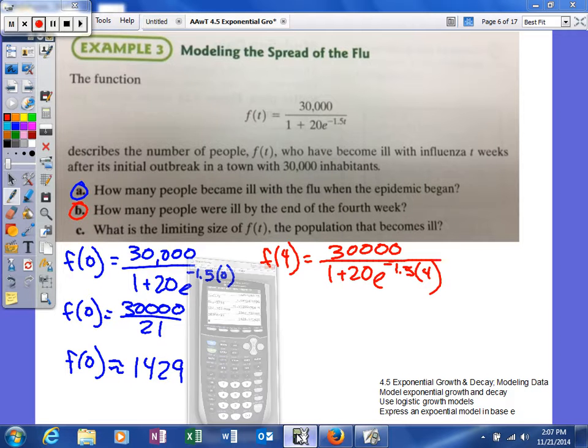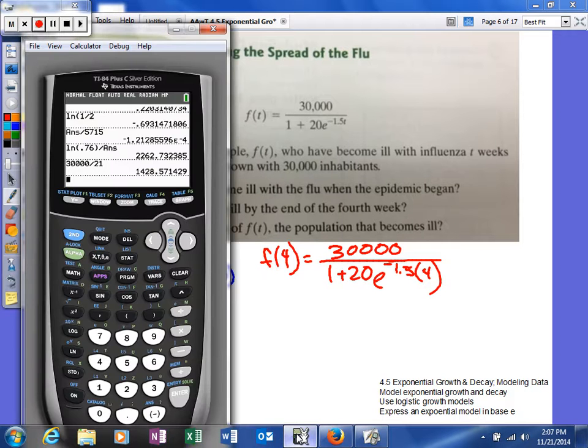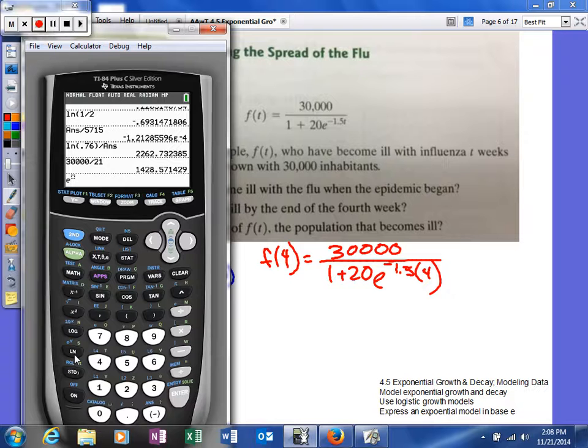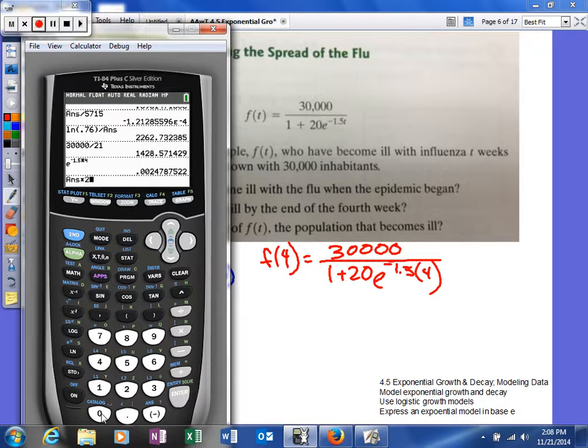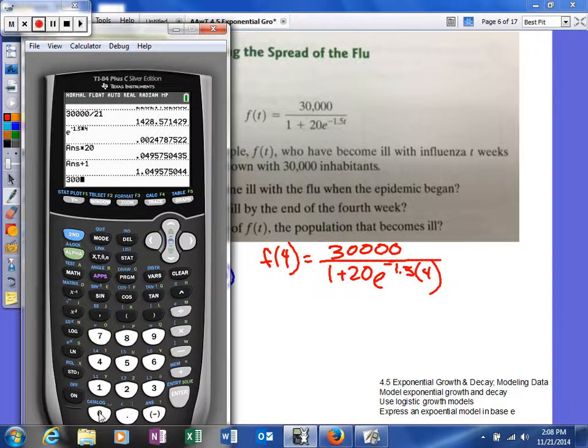We'll bring back up our calculator. We'll calculate e to the negative 1.5 times 4 power, multiply that by 20, then add 1. Then we'll take 30,000 and divide it by that answer.